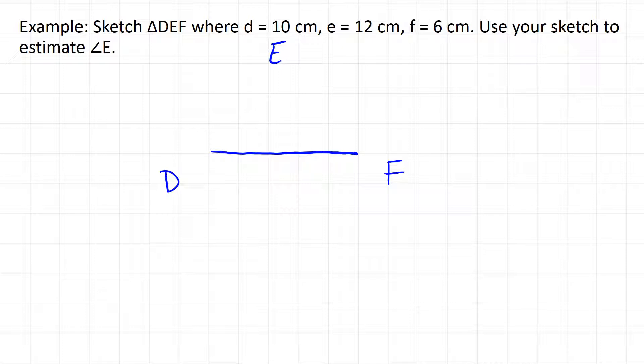So now across from big E, we have little e, and we're told that that's 12 centimeters. And now we're ready to start sketching those other two sides.